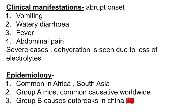Clinical manifestations are abrupt in onset. The infection causes vomiting followed by watery diarrhea, and later fever and abdominal pain may develop. In severe cases, dehydration is seen due to loss of electrolytes and water. Normally, these manifestations subside within a few days, but in severe infection, significant dehydration can occur.